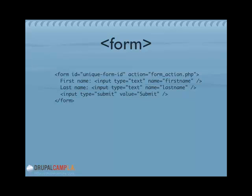The text input fields have a label and an input tag with type equals text. They both have a name attribute — first name and last name. After those on line 4, there's a submit button: an input tag with type equals submit. The value is the text string displayed in the button — I put 'submit', but you could say 'go', 'subscribe', whatever you want. Then there's the closing form tag at the bottom.